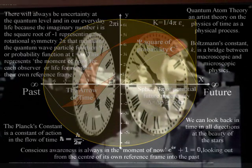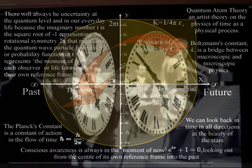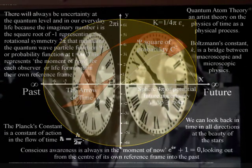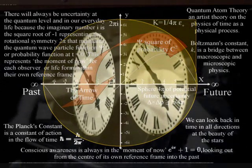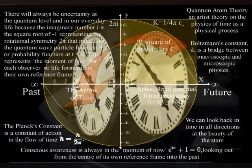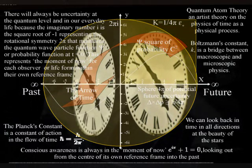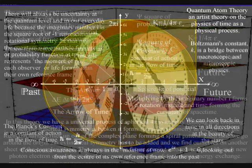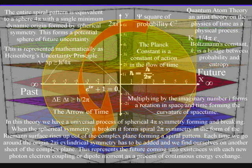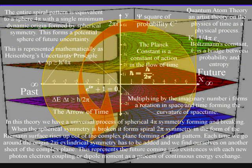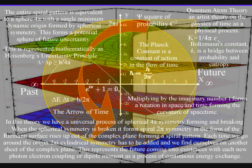This represents a process of spherical symmetry forming and breaking. When the spherical symmetry is broken it forms spiral symmetry in the form of the Riemann surface rising up out of the complex plane, forming a spiral pattern. Each time we go around the origin 2pi, cylindrical symmetry has to be added and we find ourselves on another sheet of the complex plane.